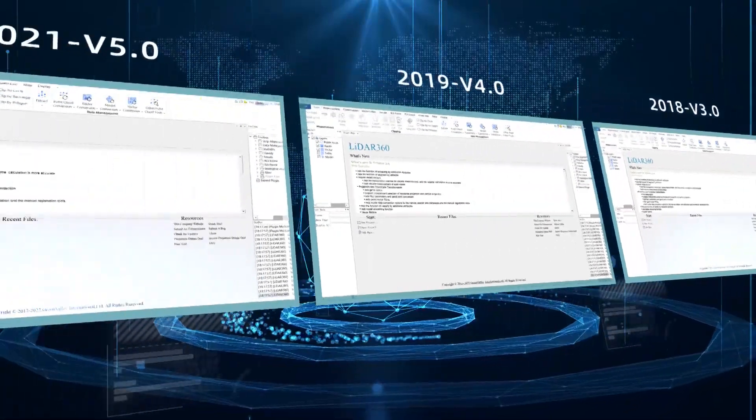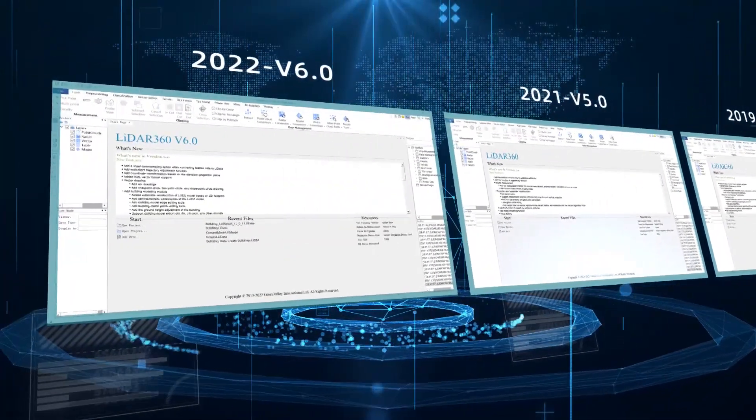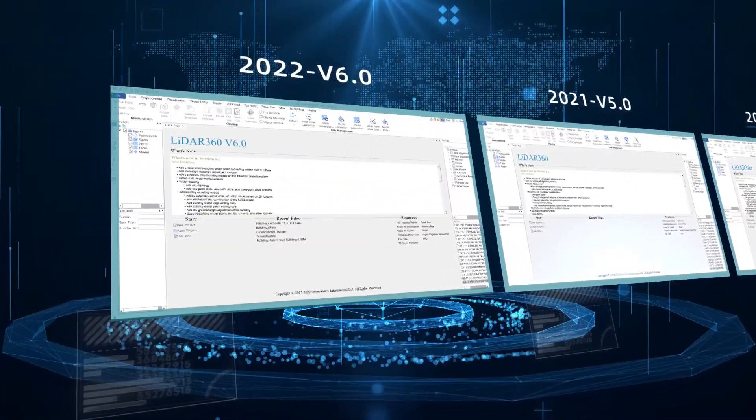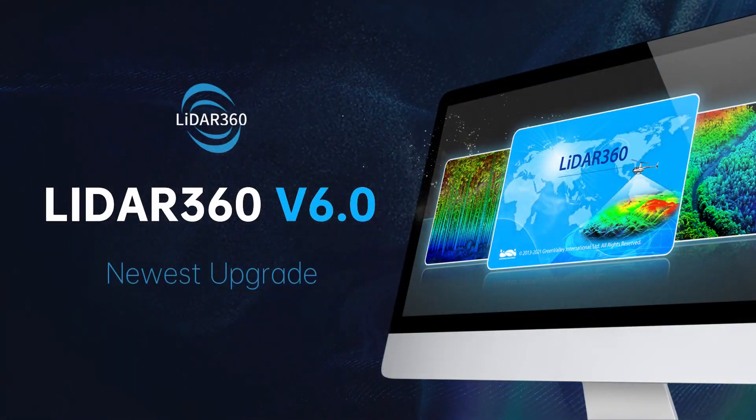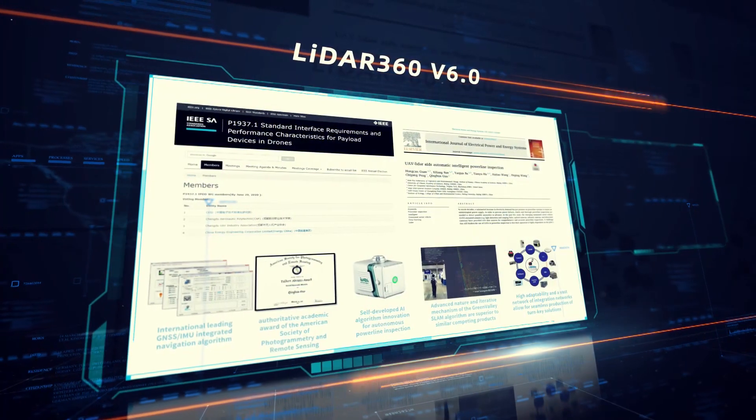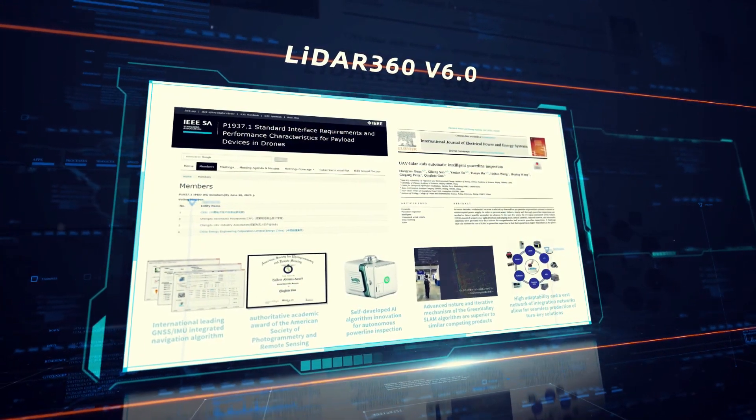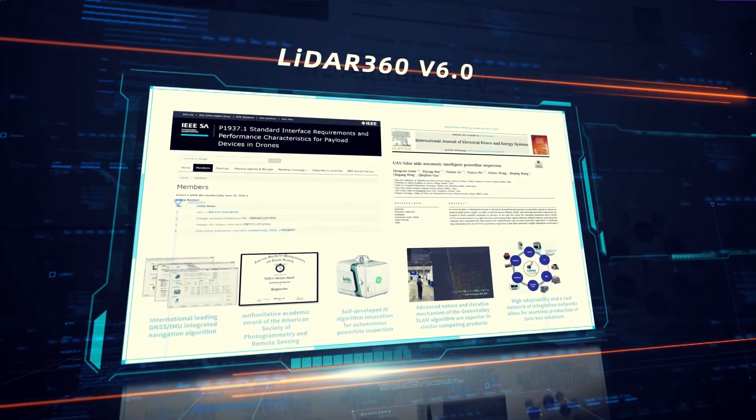After 20 plus versions of R&D iterations, our most comprehensive update yet: LiDAR 360 version 6.0. The software has more than 200 industry-leading point cloud algorithms and industry-built functions.